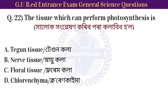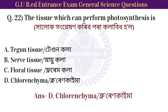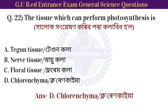Next question: the tissue which can perform photosynthesis is. Option: chlorenchyma. The tissue that can perform photosynthesis is chlorenchyma.